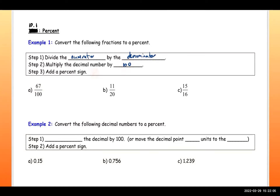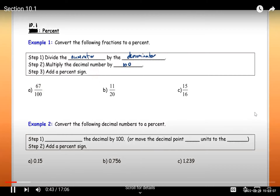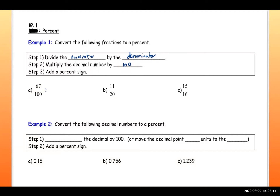Let's try this out. If you do 67 divided by 100, that's going to move the decimal over two spaces to the left, giving you 0.67. Then we multiply by 100, which gives us 67, and then you add the percent sign at the end.